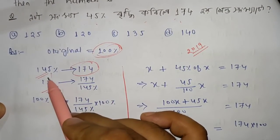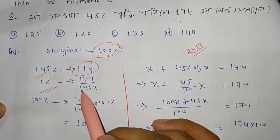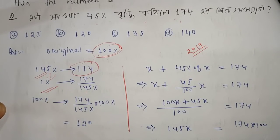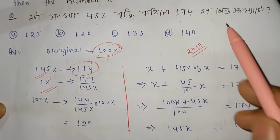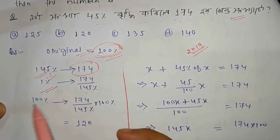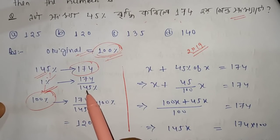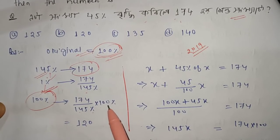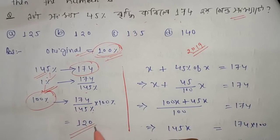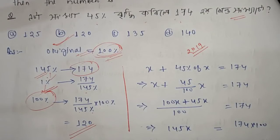So 1% value of the number — the original value is 100%. So 100% value equals 174 divided by 145 into 100, which is solved as 120. So option B is the correct answer.